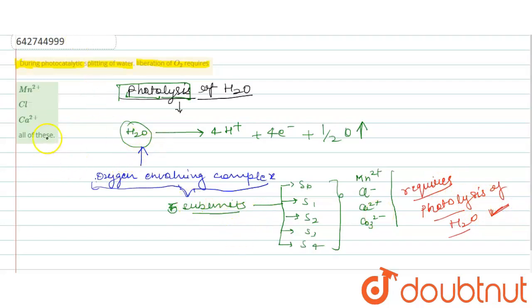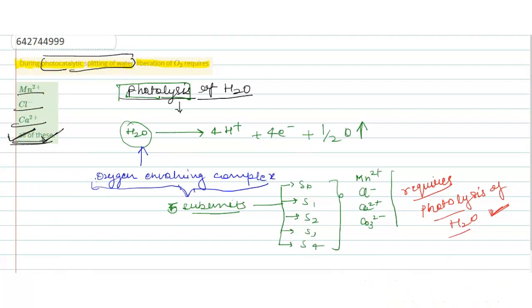According to this explanation, the answer is the last option, 'all of these': manganese, chloride, and calcium ions—these all ions are required for the photocatalytic splitting of water. So this will be our answer. Hope you understand well, thank you.